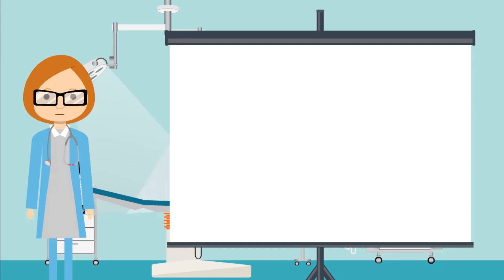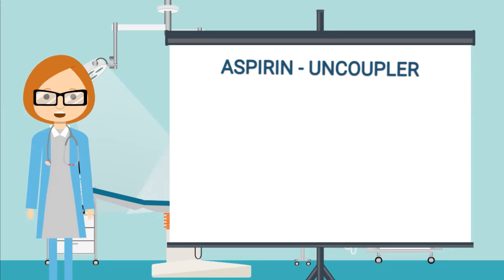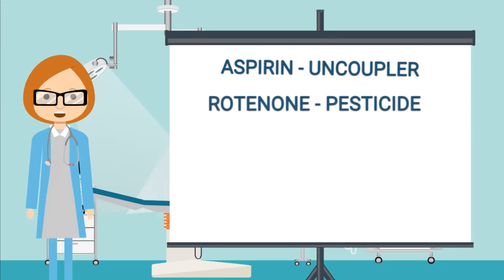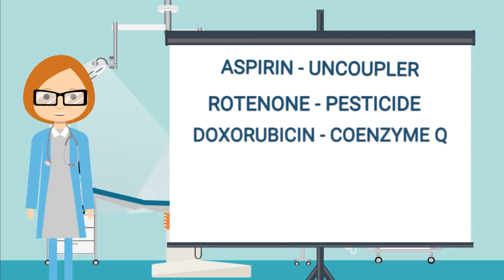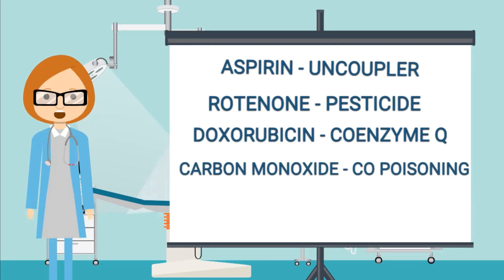Here are a few clinical examples where the electron transport chain is important. Aspirin, a very commonly prescribed painkiller, is an uncoupler. Rotenone is a broadly used pesticide — poorly absorbed by skin, but purposeful ingestion can be fatal. Doxorubicin is a drug used in cancer chemotherapy; however, it can cause cardiomyopathy, where coenzyme Q is implicated. Carbon monoxide disrupts the electron transport chain, binds to hemoglobin to form carboxyhemoglobin, and can be fatal to the cardiac and nervous systems.